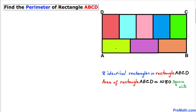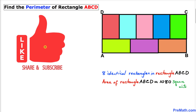Welcome to pre-math. In this video tutorial we have got a big rectangle ABCD whose area is 1080 square units, and within this rectangle we have eight identical rectangles as you can see in this figure. Now we are going to calculate the perimeter of rectangle ABCD. Please don't forget to give a thumbs up and subscribe.